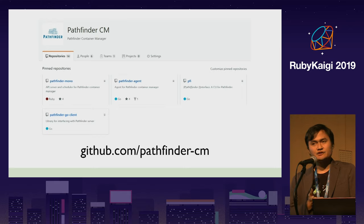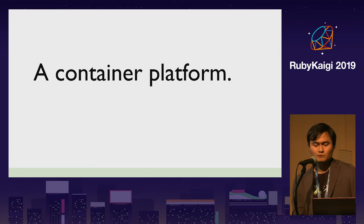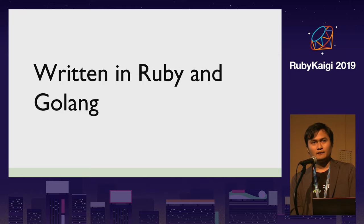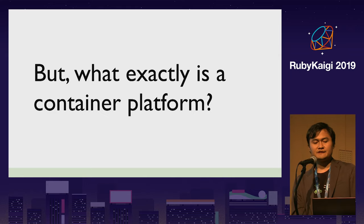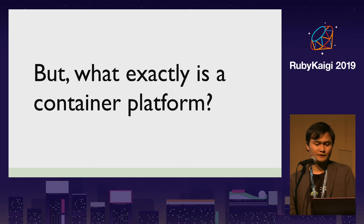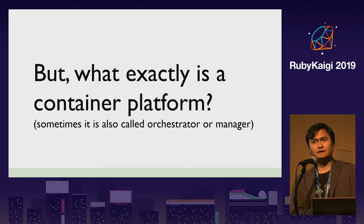That platform is called Pathfinder — it's on GitHub right now at github.com/pathfinder-cm, which stands for Container Manager. It is a container platform written in Ruby and Go. A container platform is sometimes also called an orchestrator or manager.